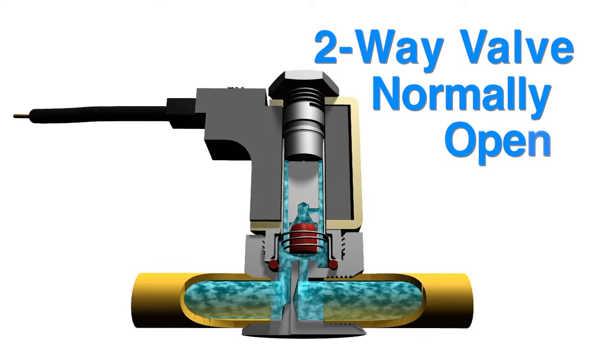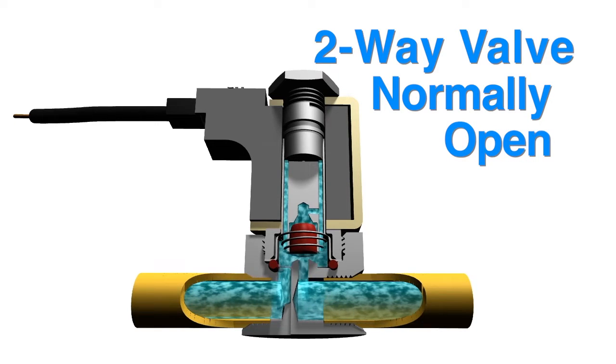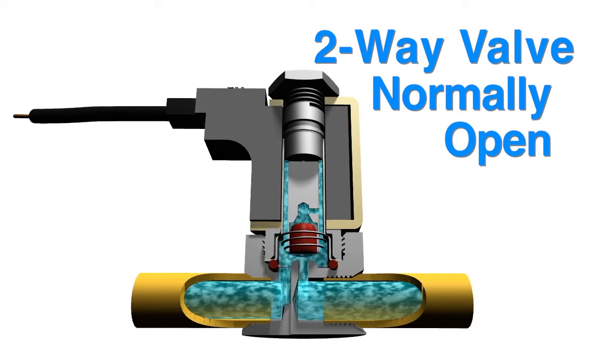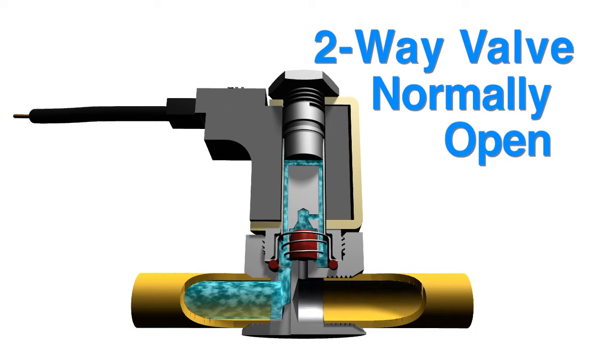Alternatively, in two-way normally open valves, pressure flows from one port to the other when the power is off and the valve is de-energized. Turn the power on and flow ceases.